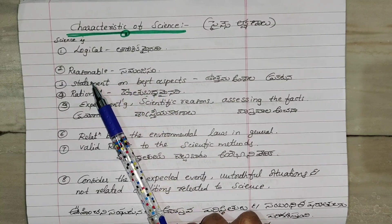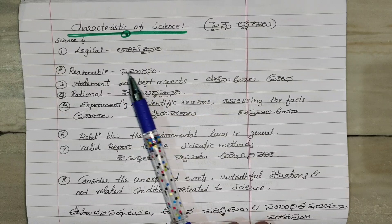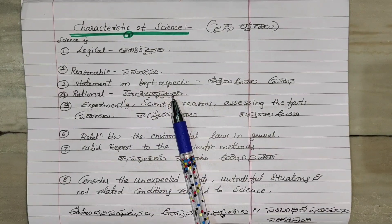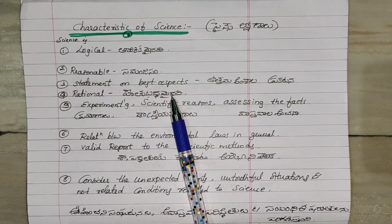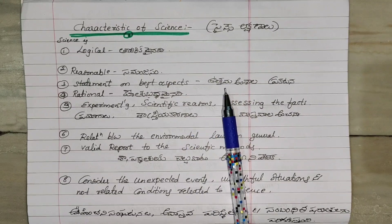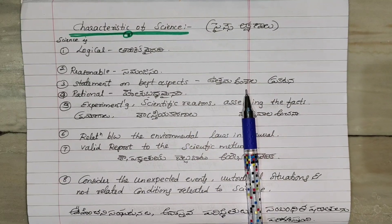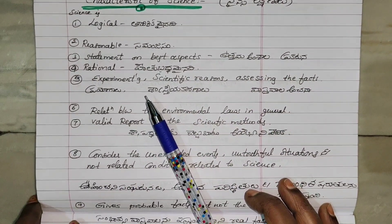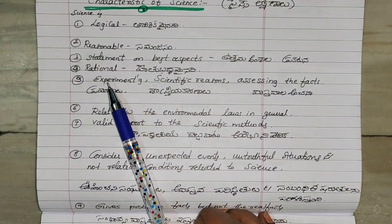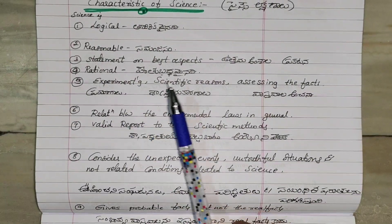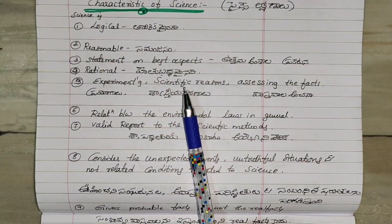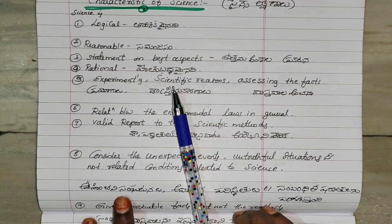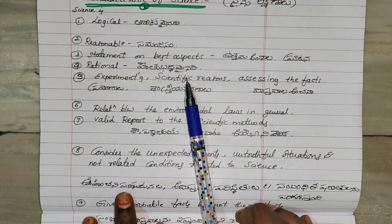Science is reasonable. We will make statements on the best aspects. Science requires proof.